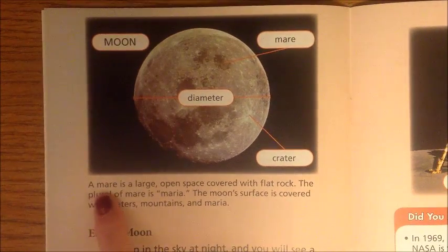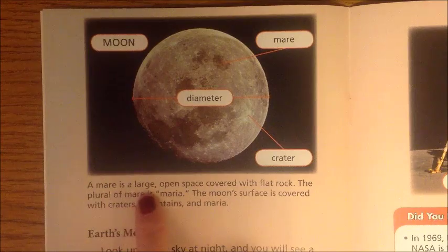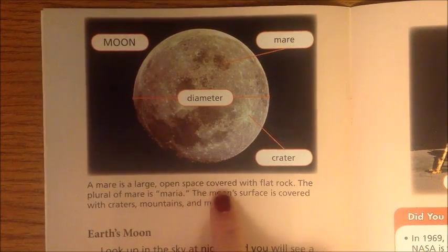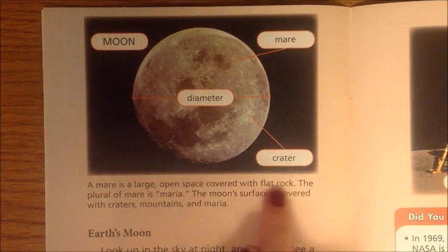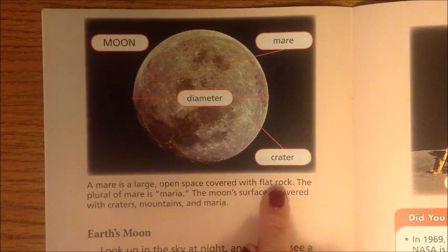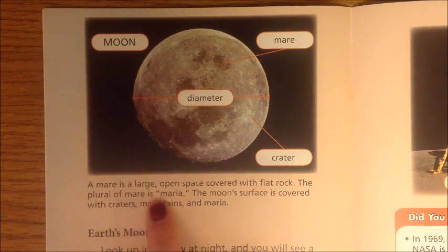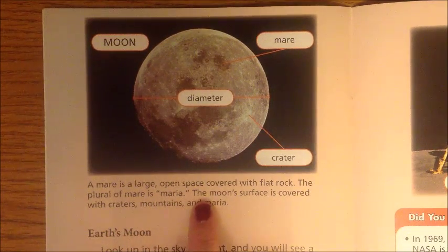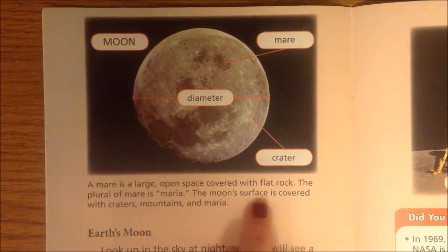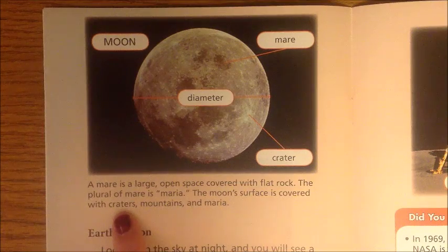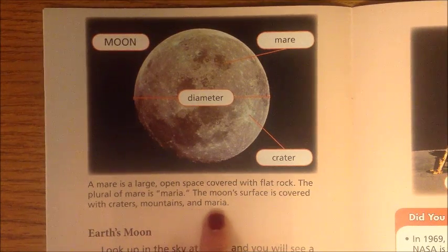A Mare is a large open space covered with flat rock. The plural of Mare is Maria. The moon's surface is covered with craters, mountains, and Maria.